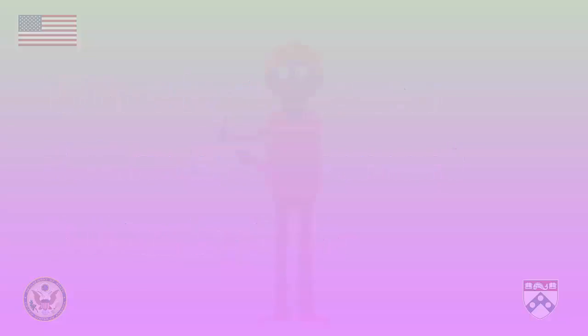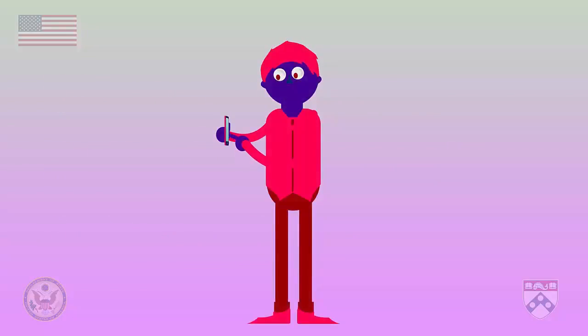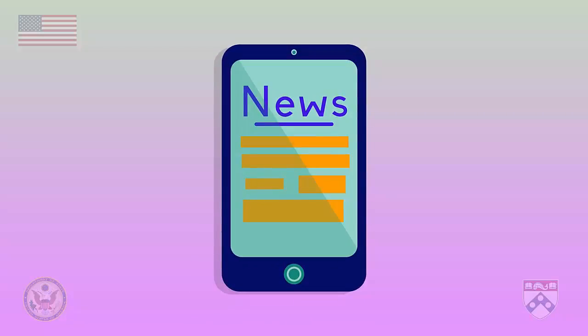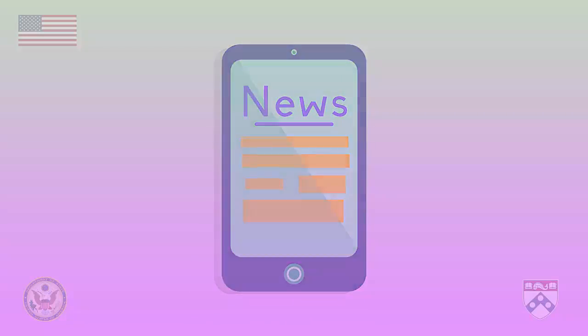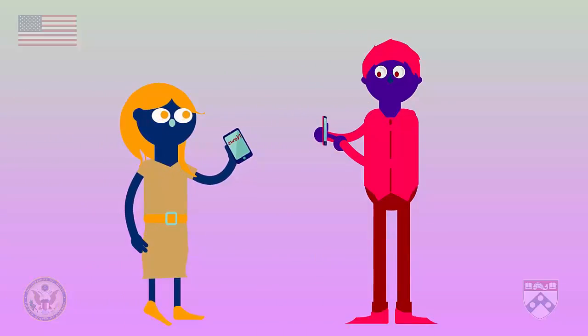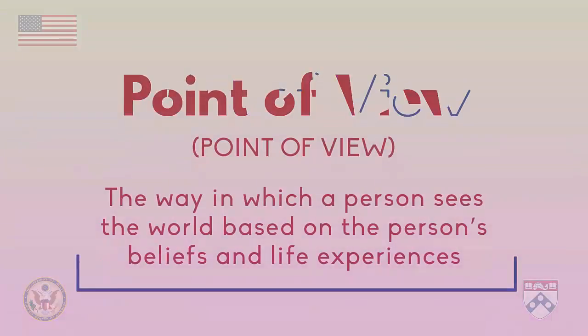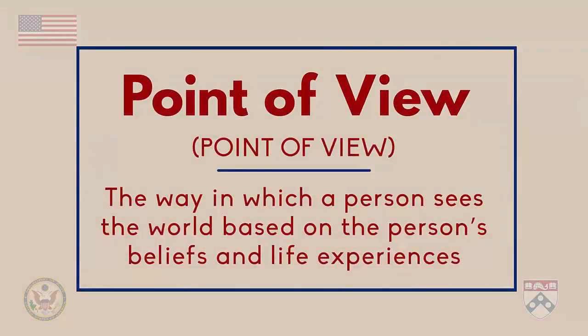This is Adathy. Every morning she checks the same news website to see what's happening in the world. She likes the way the articles are written and she feels that she is getting good information. But one day her friend Ronnie recommends a different news site. When Adathy goes there she sees some completely different news stories with a completely different point of view. Remember, point of view means the way in which a person sees the world based on that person's beliefs and life experiences. These differences in point of view might represent bias.